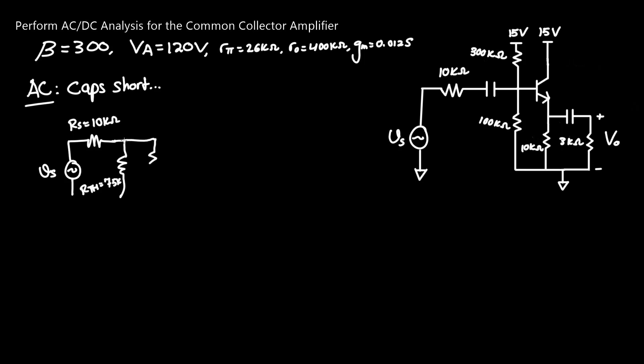Moving on, we now have Rpi, which we found to be 26 kilo ohms, and we can connect the bottom potentials here. Now let's add the dependent current source that is in all these models, GmvPi, and we add our last resistance RO, which is always to the right of the BJT, top right, which we found to be 400 kilo ohms.